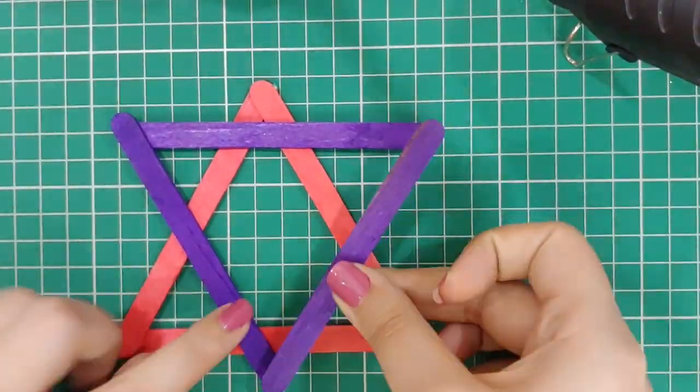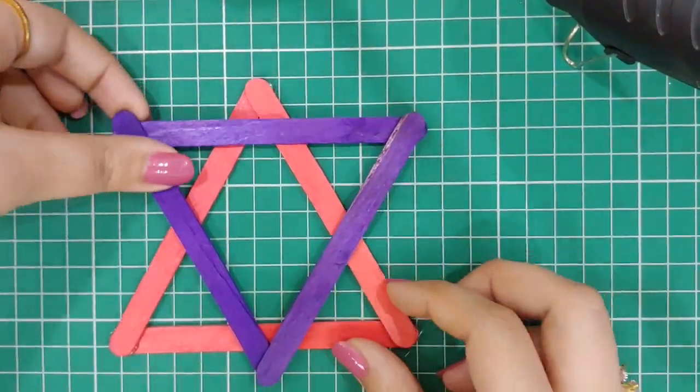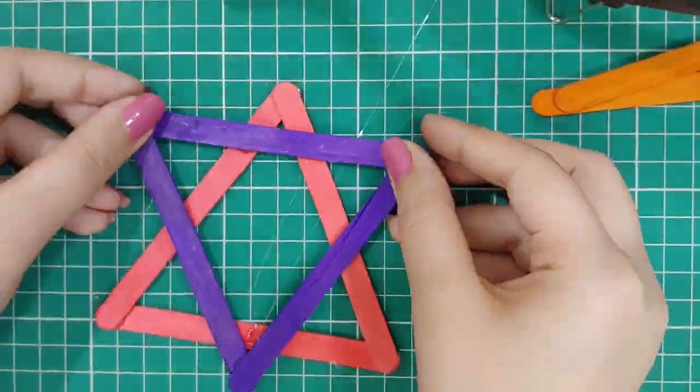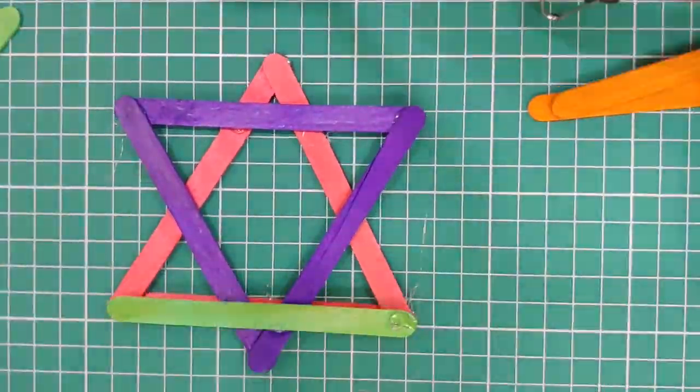Now stick both the triangles together in the shape of a star and keep repeating this with all the ice cream sticks unless you get the desired length for your pen stand. And it's done.